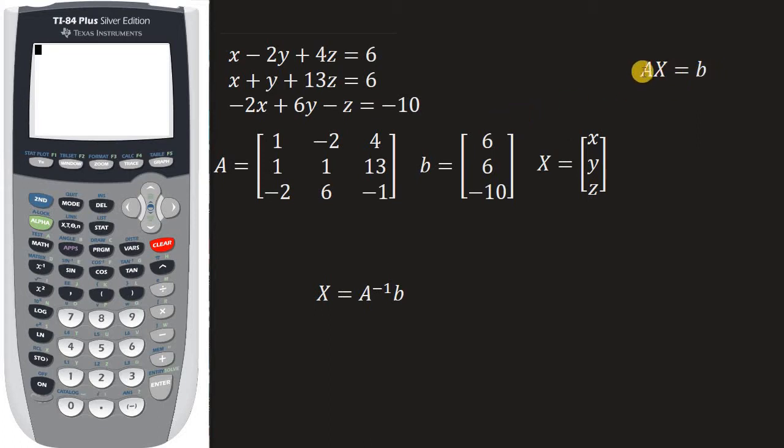Okay, so a is our coefficient matrix. The way that we get that, a, is if you look at just this part of the system, everything on the left hand side of the equal sign.